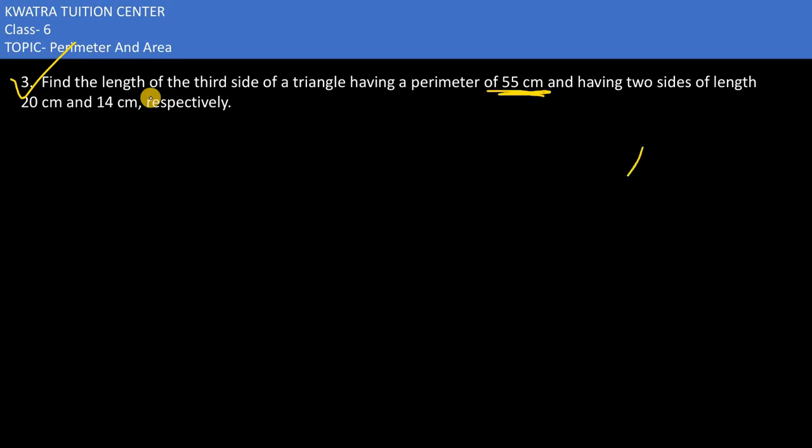Now what is given here is a triangle and its perimeter. They are saying its perimeter is 55 cm overall, having two sides of length 20 cm and 14 cm.